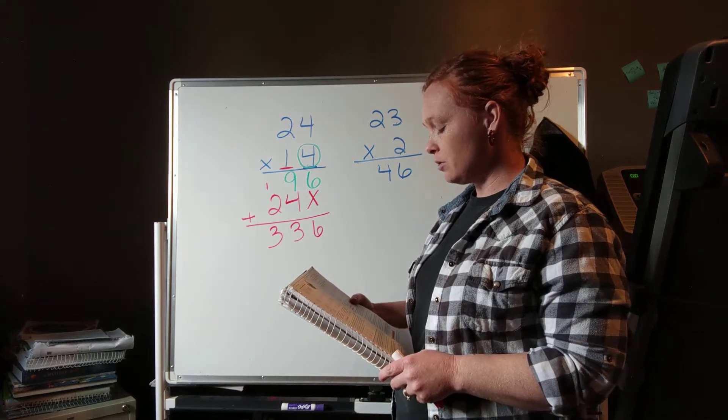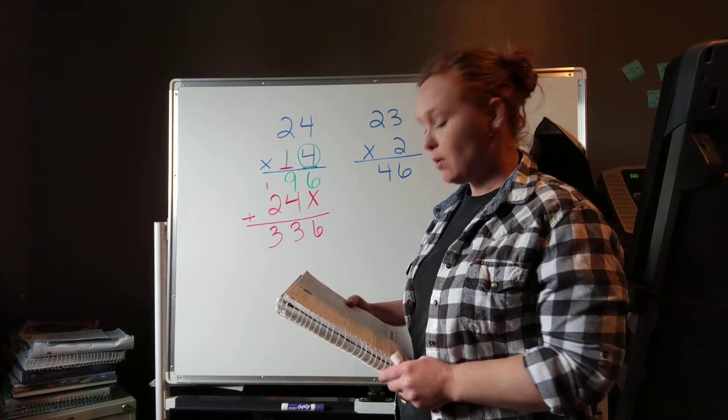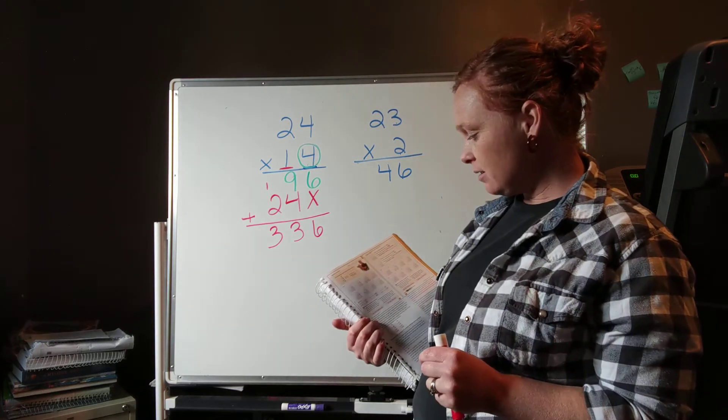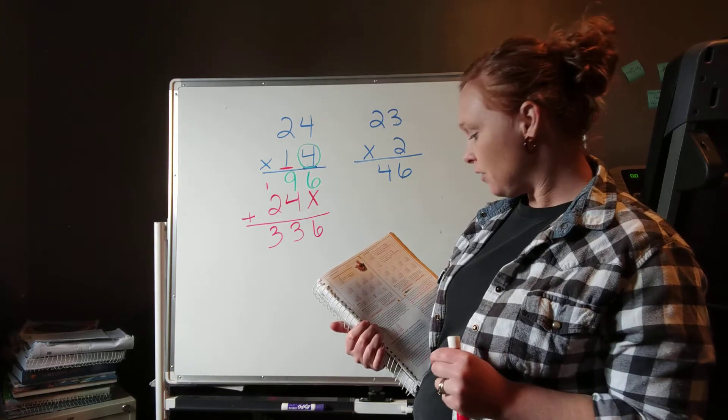So if you will look at numbers 1 through 8, you're going to be multiplying those. It gives you the boxes. Okay, but look down at number 9, 10, 11, 12, 13, and 14.